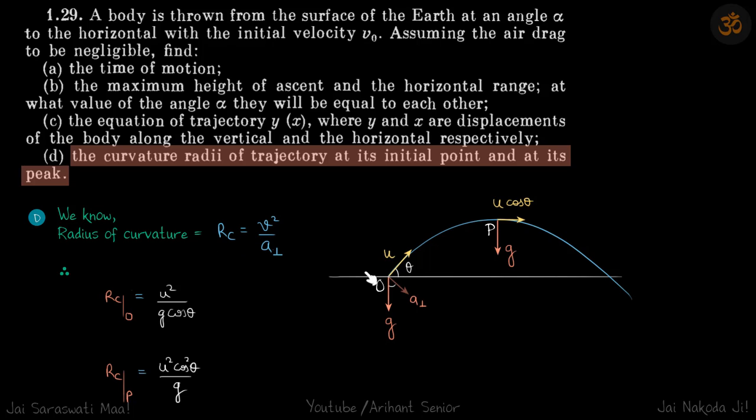So at this point graphically we will see this is u initially and acceleration is g downwards. So the numerator we need is u square, and denominator we need a perpendicular. So this is the actual acceleration. We need in the direction perpendicular to u. That will be this. So this is theta, this is also theta. So a perpendicular is g cos theta. So our answer is at origin radius of curvature is u square by g cos theta.